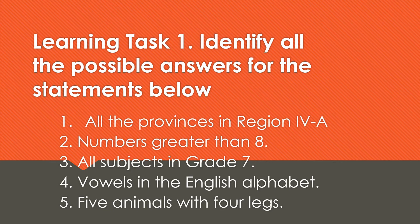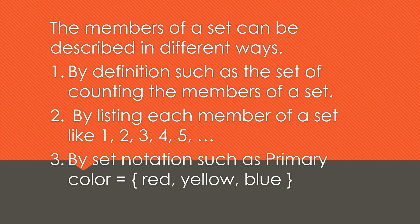Numbers of a set can be described in different ways. Number one: by definition, such as the set of counting members of a set — for example, a set of even numbers or a set of odd numbers. Number two: by listing each member of a set, like one, two, three, four, five.